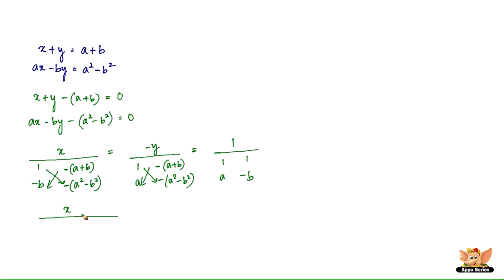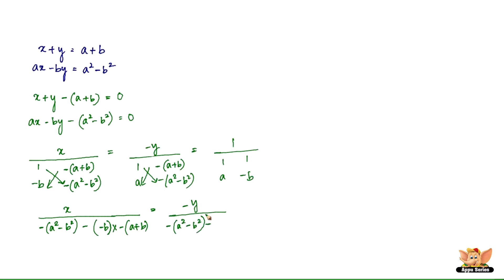Solving the cross products: x divided by 1 times minus of (a squared minus b squared), minus of minus b times minus of (a plus b). This equals minus y divided by 1 times minus of (a squared minus b squared), minus of a times minus of (a plus b). Equal to 1 divided by 1 times minus b, minus of a times 1, which gives minus b minus a.